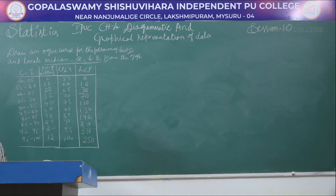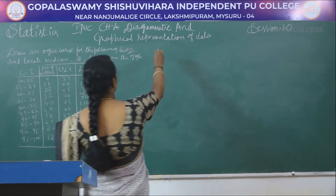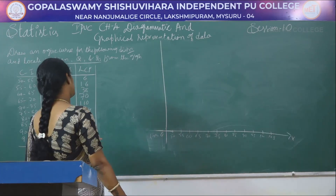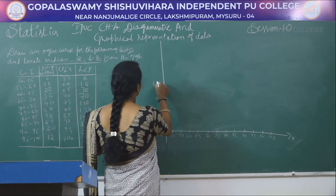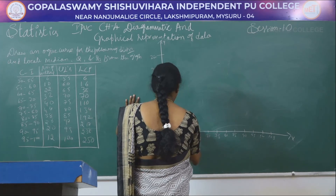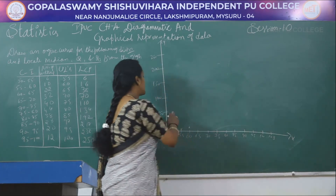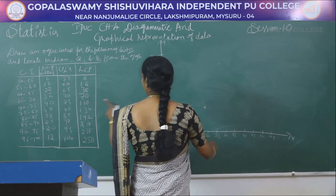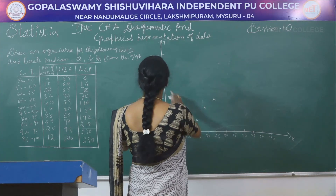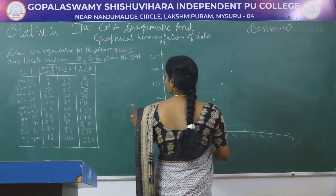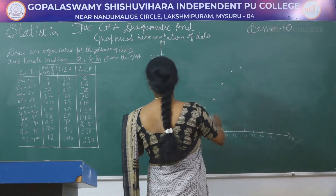The upper class limits are: 55, 60, 65, 70, 75, 80, 85, 90, 95, 100. The LCF values are: 6, 16, 38, 70, 110, 154, 192, 218, 238, 250. This is how the LCF values are calculated. Next, we draw the graph with x-axis and y-axis, and plot the points accordingly.